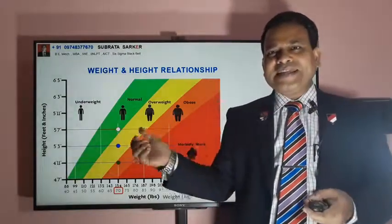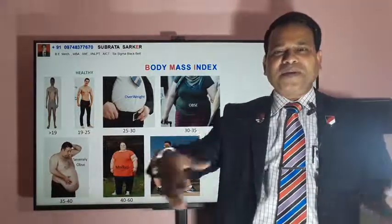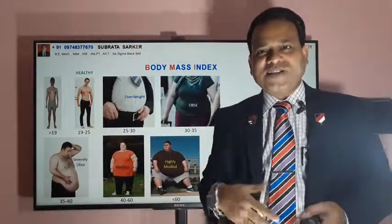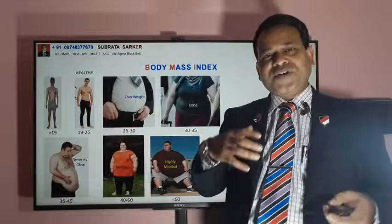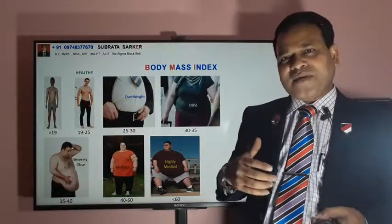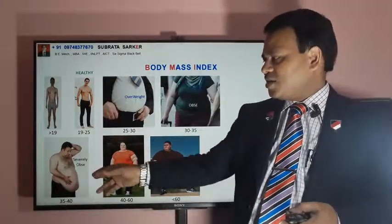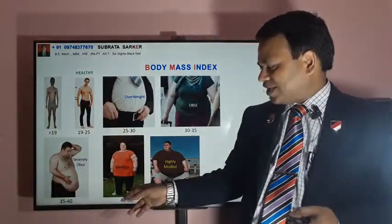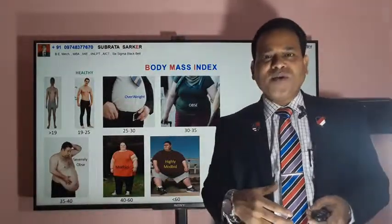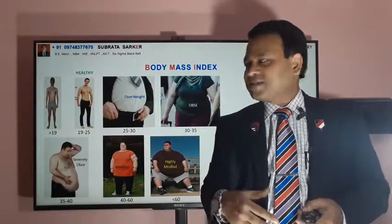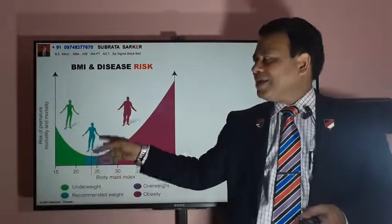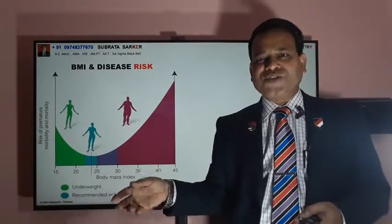From the chart, if your body mass index is ranging from 19 to 25, you will be considered healthy. If it is less than 19, it is underweight. If it is 25 to 30, you will be considered overweight. If your body mass index is between 30 to 35, you will be overweight. If it is 35 to 40, you will be severely overweight. If it is 40 to 60, it is morbid overweight. If your body mass index is more than 60, you will be severely morbidly obese. From this curve, if your body weight is right, that is healthy — body mass index versus disease risk.